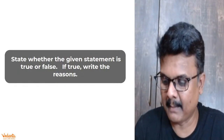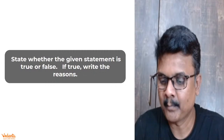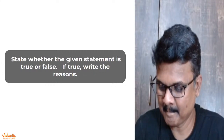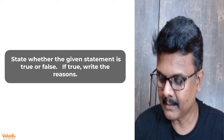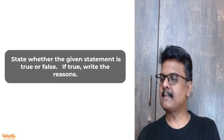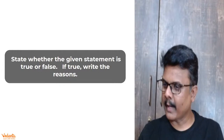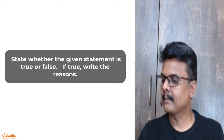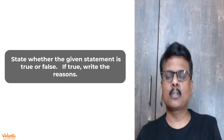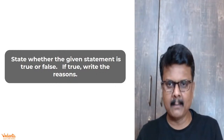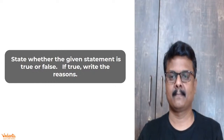Now moving to the next segment: true or false. Statement one — Ganga-Brahmaputra Plain is an overpopulated region. That is true. Statement two — water availability per person in India is declining. That is also true — the quantity of water available per individual in India is coming down day by day.